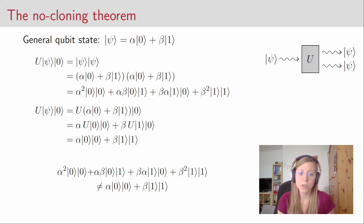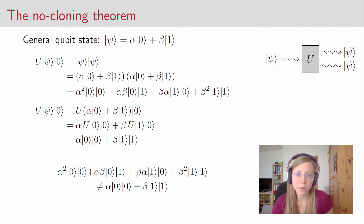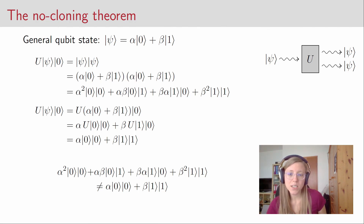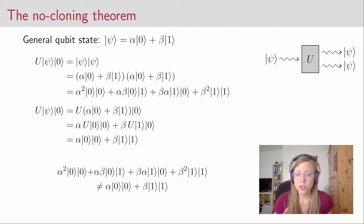These two expressions are in general not equal. The only cases where they are equal are when alpha equals 1 and beta equals 0, or alpha equals 0 and beta equals 1 — which are exactly the classical states. For classical states it is perfectly fine to copy. But for all other cases, which represent genuine quantum states, the two expressions are not equal and therefore such a universal copier cannot exist. That was the no-cloning theorem, which is really important for quantum key distribution. We also talked about composite systems and how entanglement arises. Next time, I promise, we will talk about entropies, which will be crucial for the security of quantum key distribution. Thank you for watching.